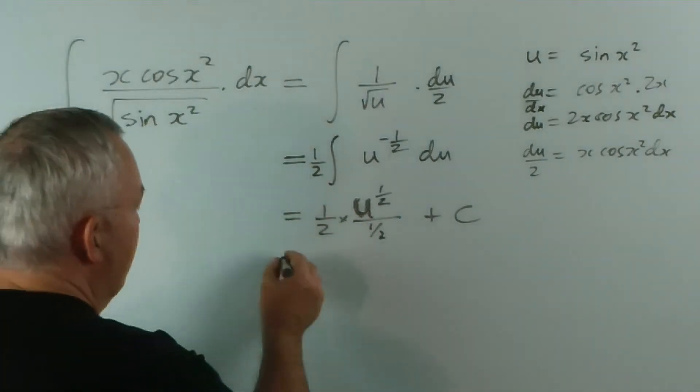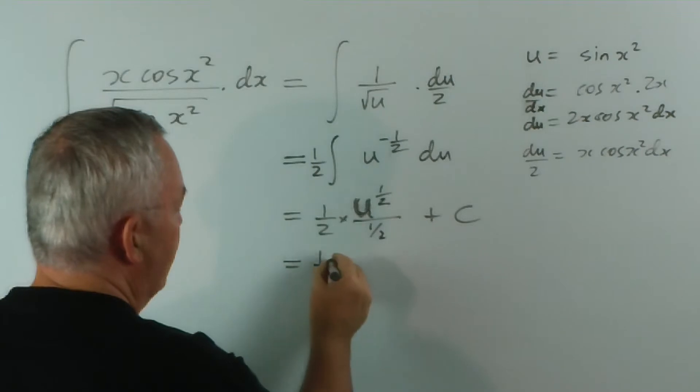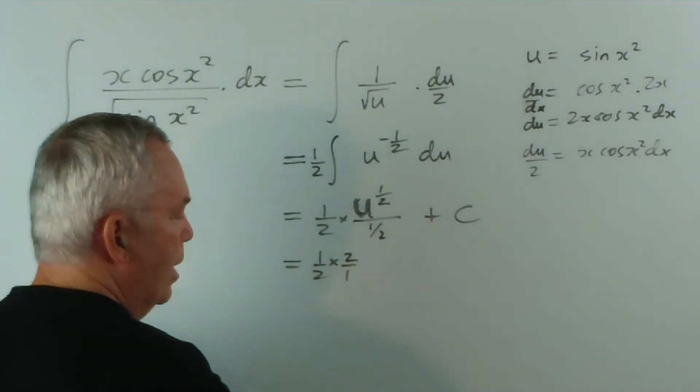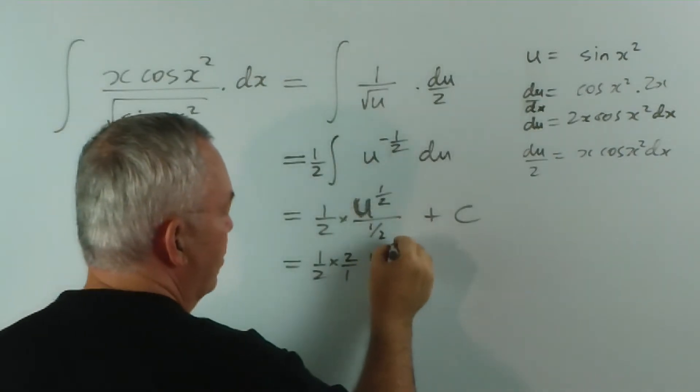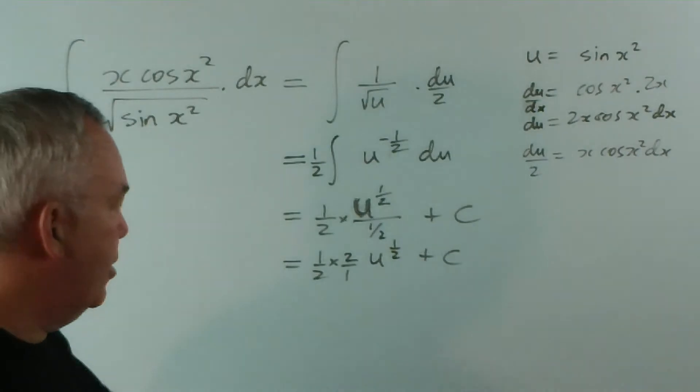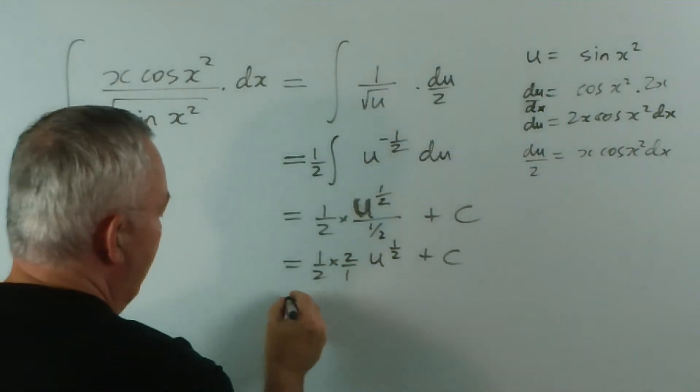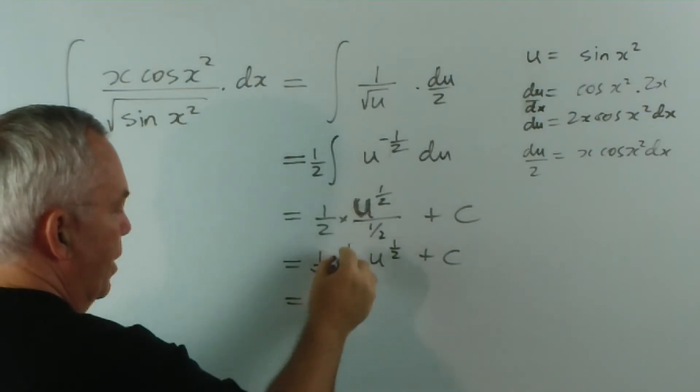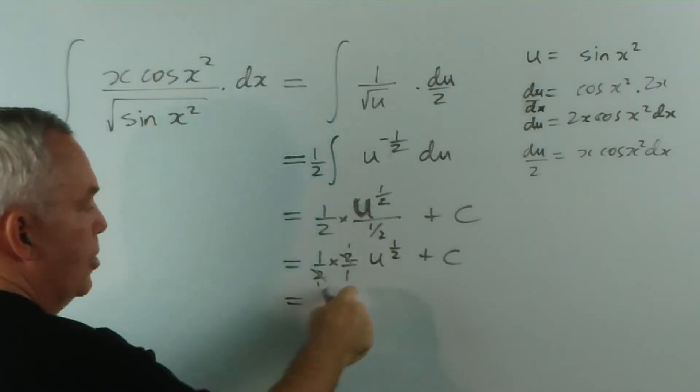Another way of thinking of it is a half times... now, instead of dividing by a half, we multiply by 2 over 1. A lot of students have difficulty with fractions inside fractions. Either way, a half of 2 is 1. So it's just u to the half.